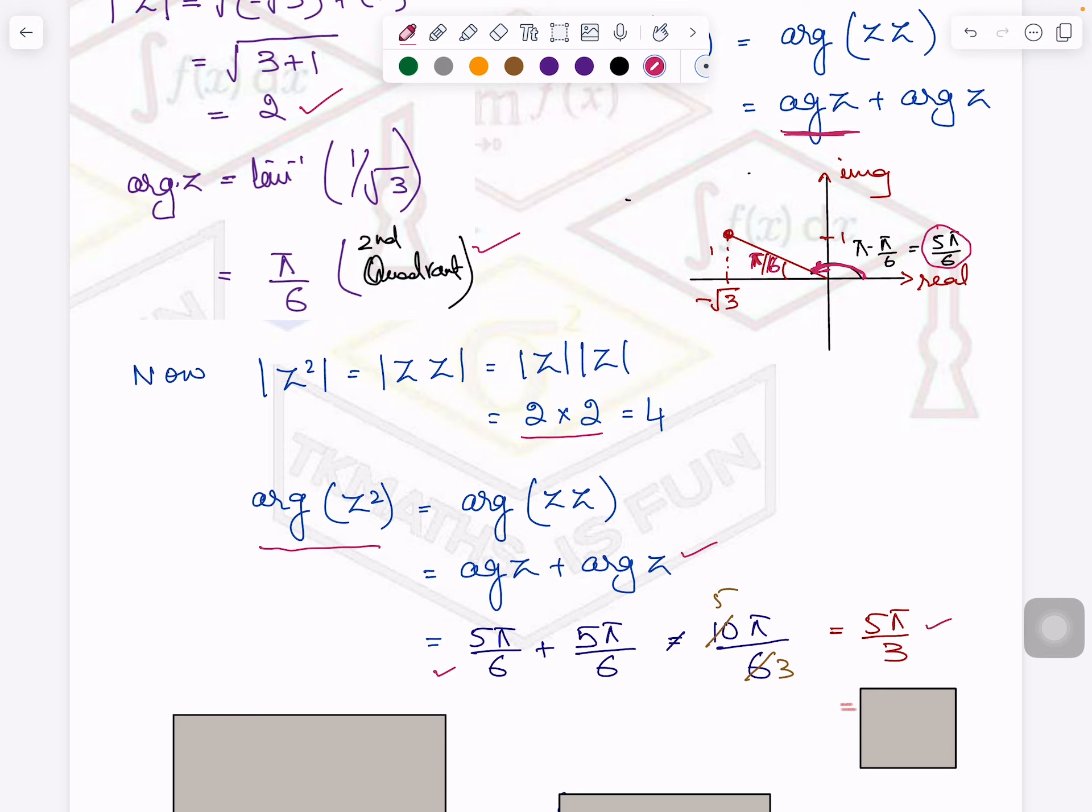Now do you know what is 5π/3 in degrees? Because we are not very comfortable with radian most of the time. It equals 300 degrees. So which quadrant I am in now? It means I am here. So whenever you are in the third and fourth quadrant, you always measure from here.